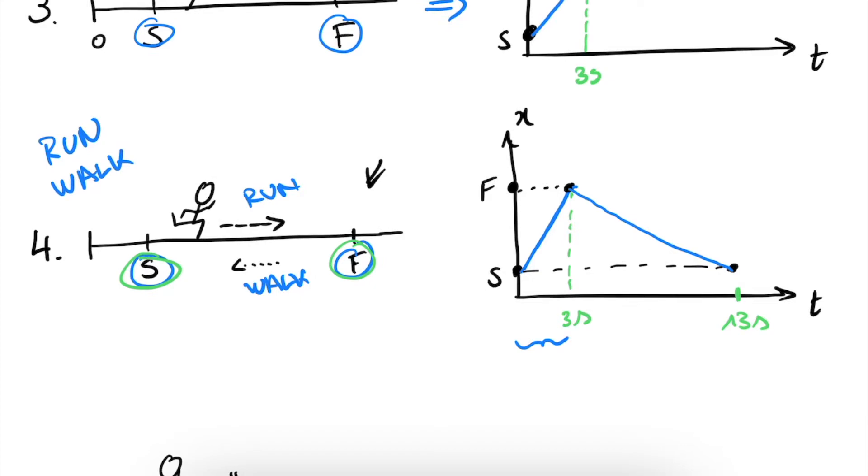So walking back from F to S in 10 seconds will correspond to this slope, which is much less steep than this initial running phase. Because at this point we are back at S. In this period, these three seconds, we run from S to F, from initial start position to final position. And then in this 10 seconds, we walk back from F to S. Right? And this is shown in this diagram here. Because we are initially running fast from S to F, and then we are walking very slowly from F to S again. So we get this shape right here.